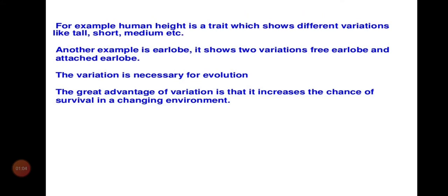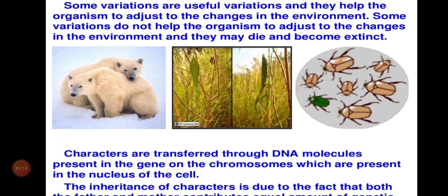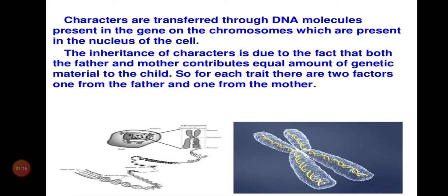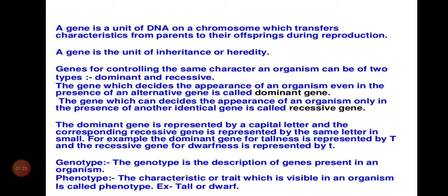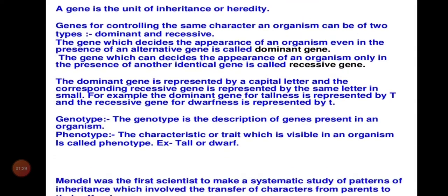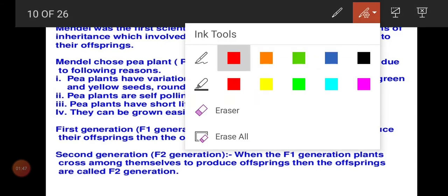We have learned about examples of variation, variations during sexual and asexual reproduction, chromosomes, chromatids, chromonema, DNA, genes, dominant and recessive genes, genotype and phenotype. We also learned about why Gregor Mendel, the father of genetics, chose Pisum sativum — the garden pea plant — for his experiments. These are the main important reasons; mark them and write them in your notes.